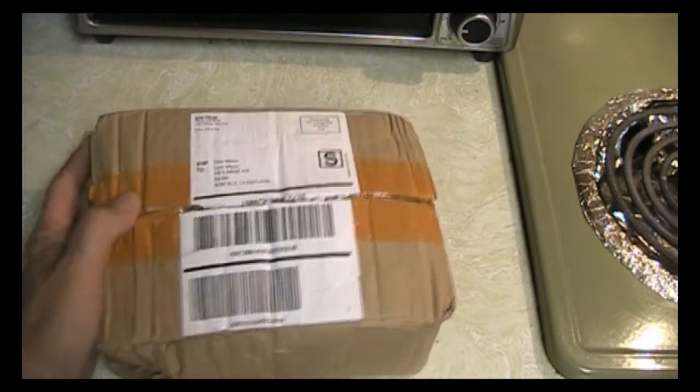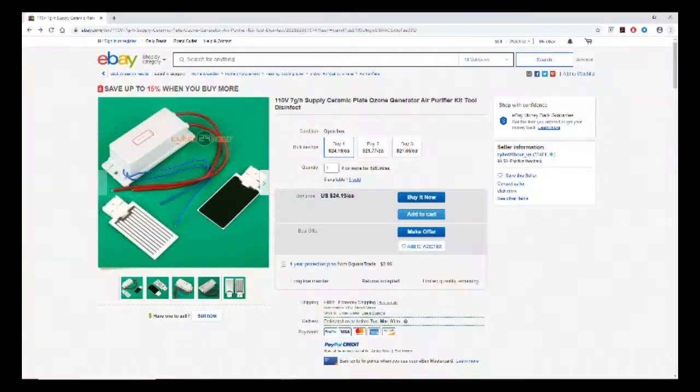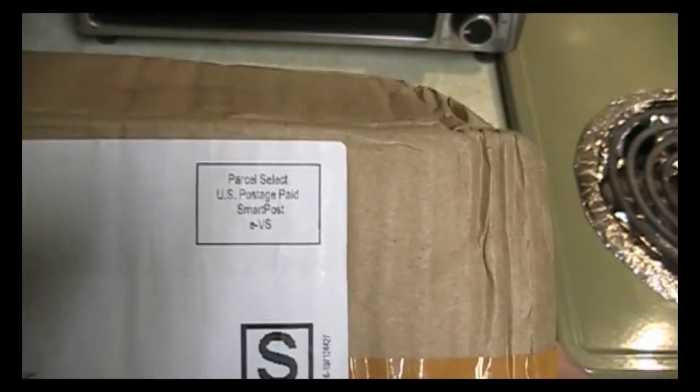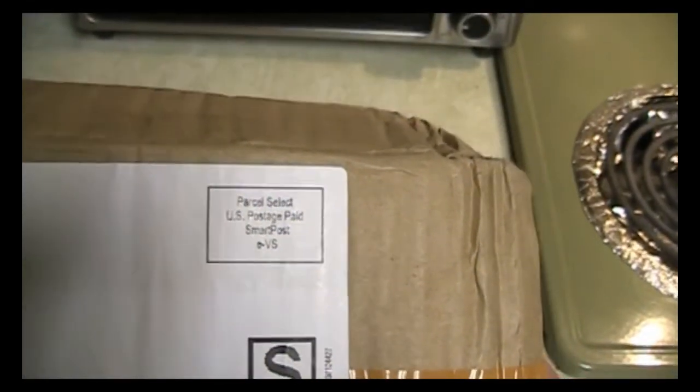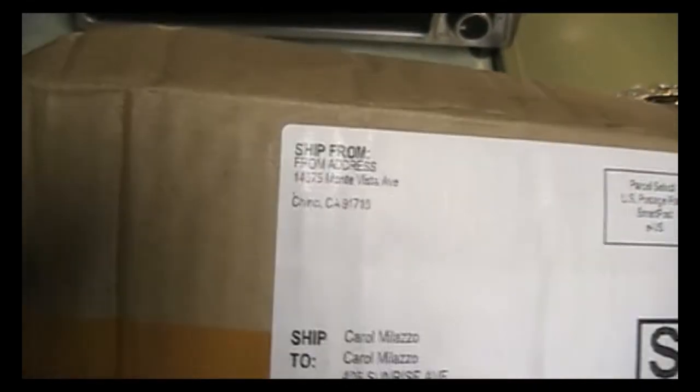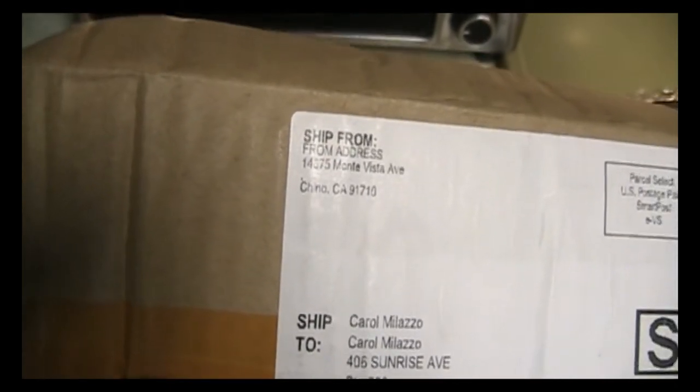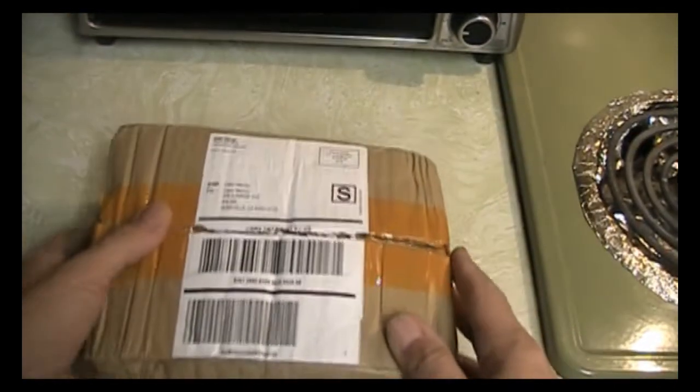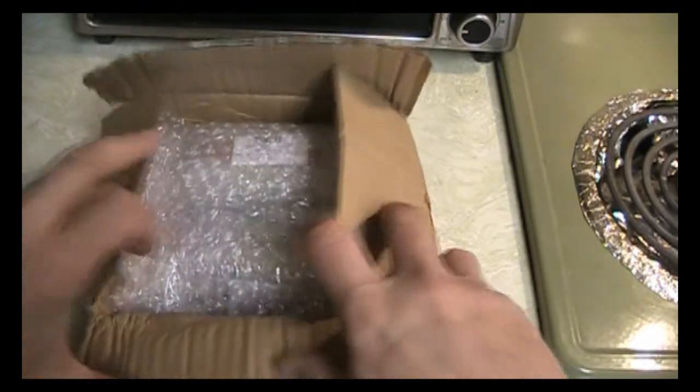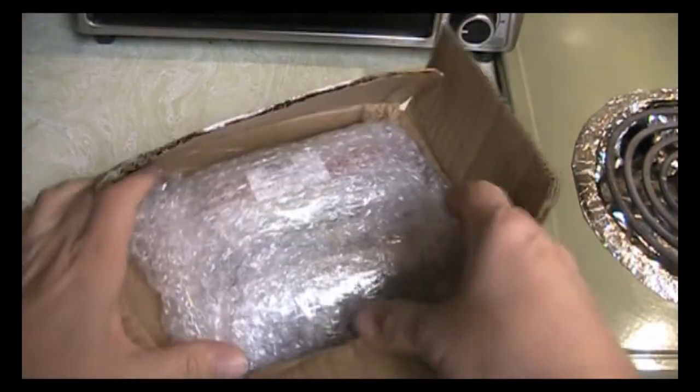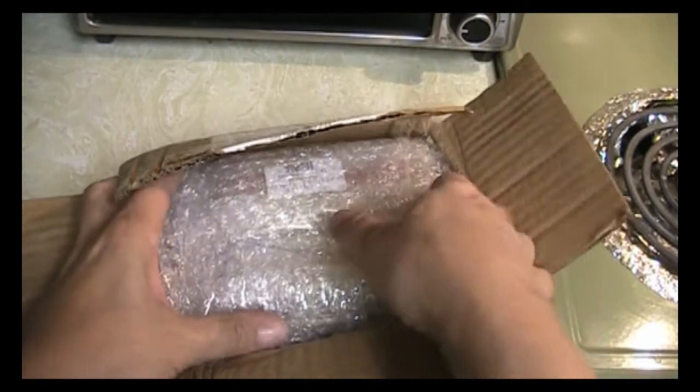Okay, this is an unboxing of an ozone generator that I found on eBay. This took about 10 days to arrive. You can see it was shipped from Chino, California. This is the way it came boxed. It was actually kind of crushed on this side, so I was a bit concerned if it was damaged at all.